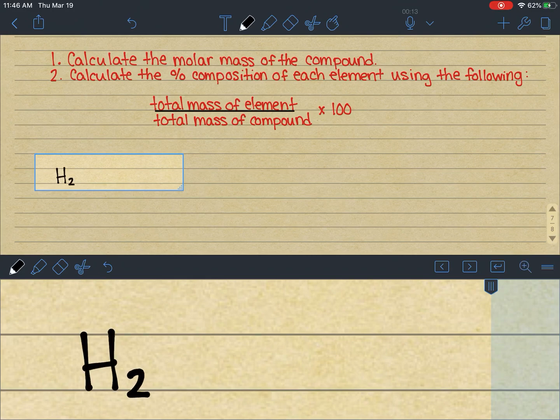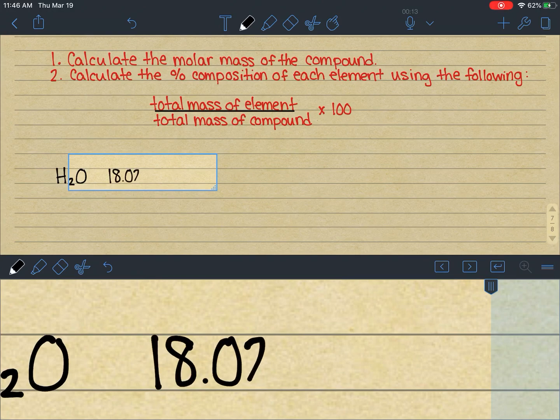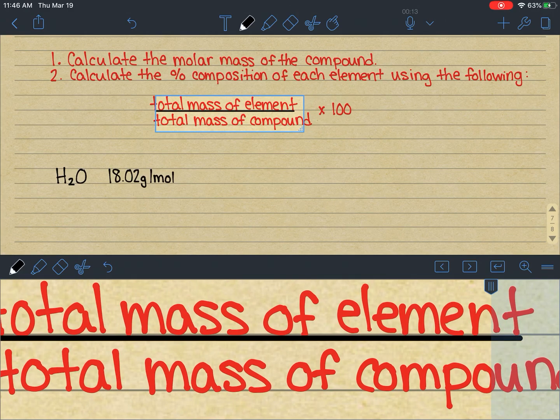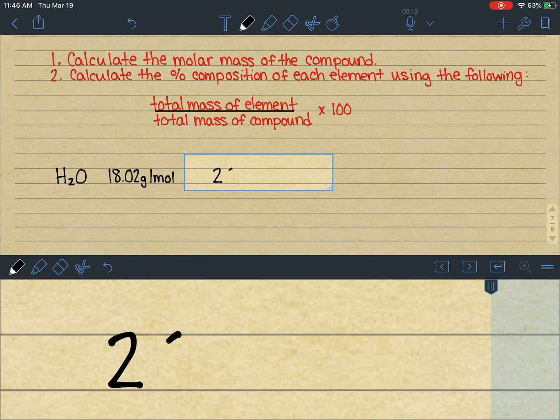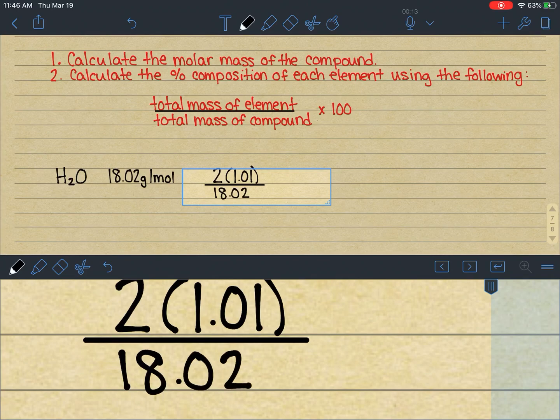So if I'm going to calculate out the percent composition of hydrogen in water, the first thing I would have done was calculate out that the molar mass of water was 18.02 grams per mole. And then I'm going to just set this up according to this equation right here. So I have two hydrogens in the water molecule times the individual molar mass of each hydrogen atom. I'm going to divide that by 18.02, and then multiply that entire thing by 100.